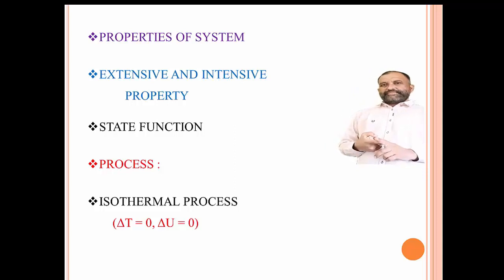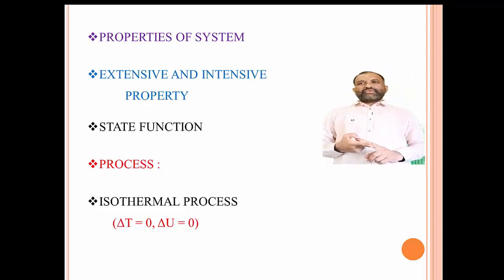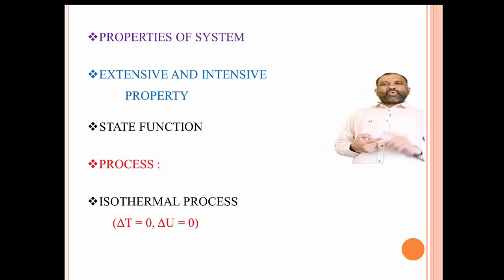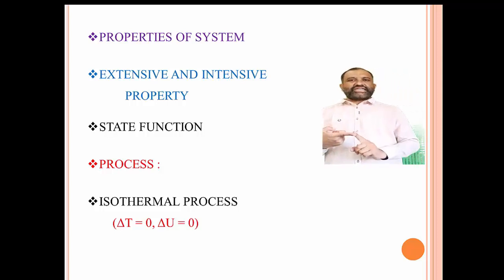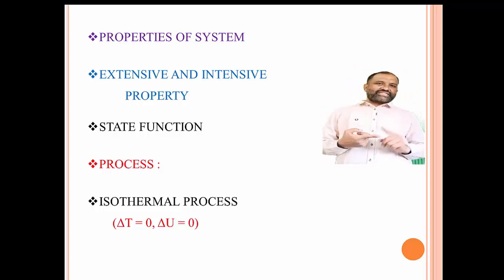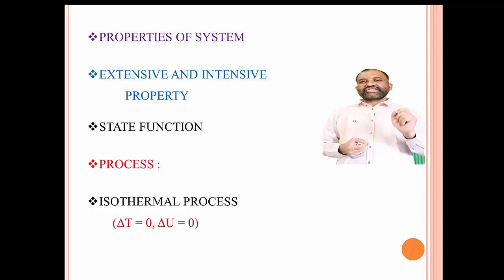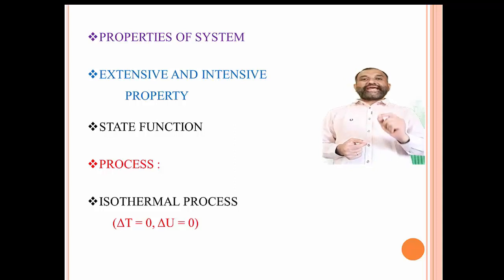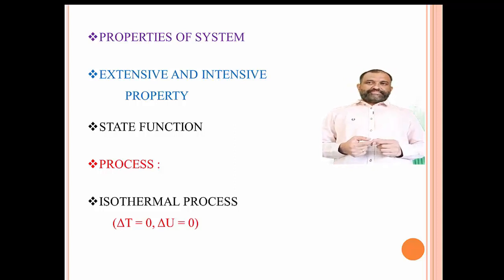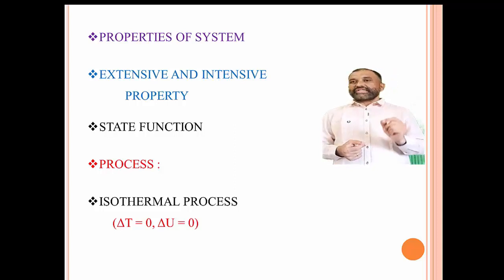The properties whose value depends only upon the state of a system — that is the initial state and the final state — is called as a state function. The property whose value depends upon the state of a system is known as a state function.